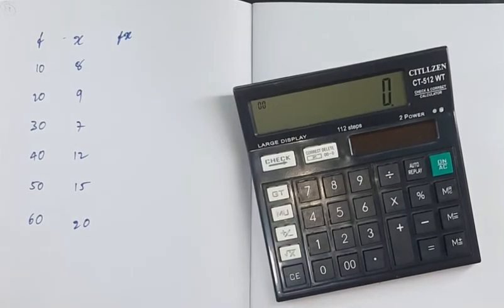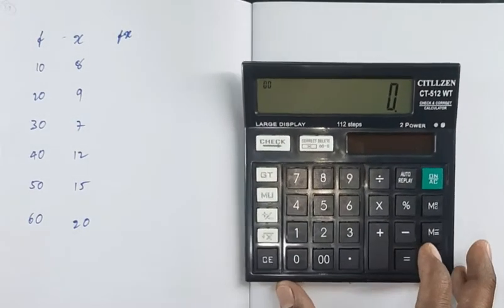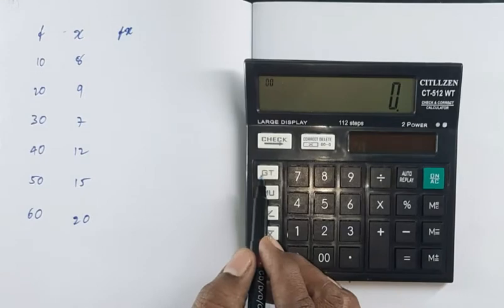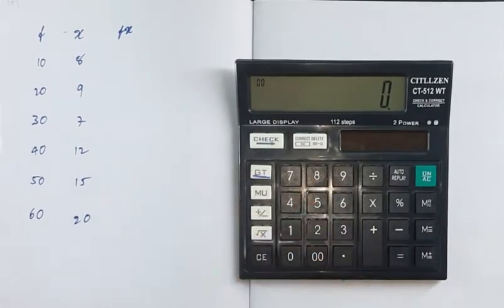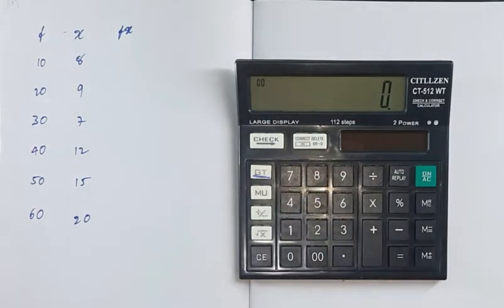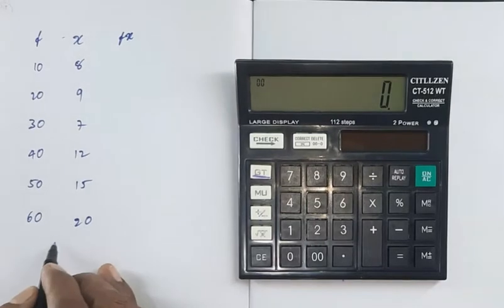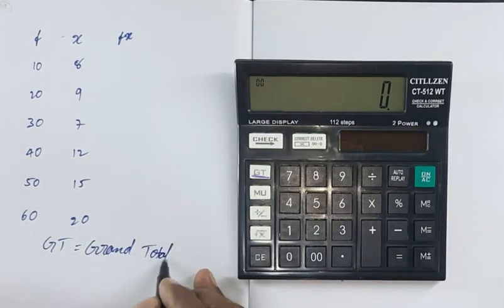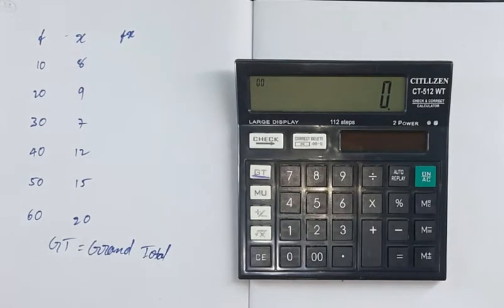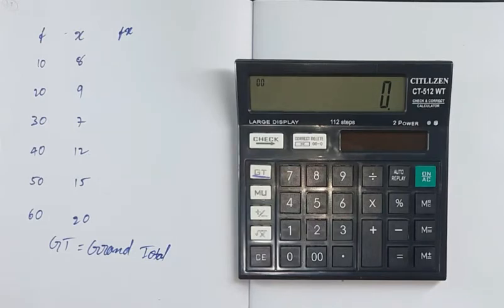In this video, we can discuss the calculator key of GT. GT means grand total. GT is grand total means total summation of values. Let's use that.